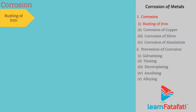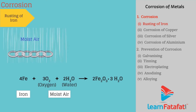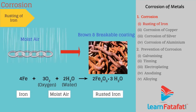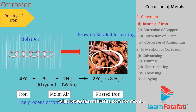Rusting of Iron: Iron reacts with moist air and forms a brown, easily breakable coating on the surface called rust. The process of formation of rust is called rusting.